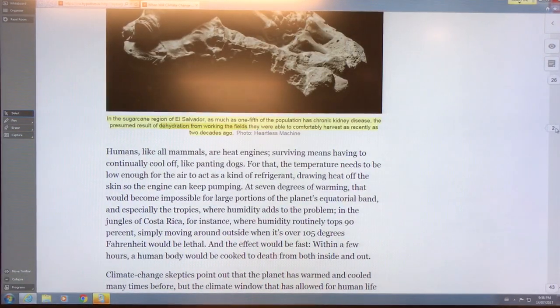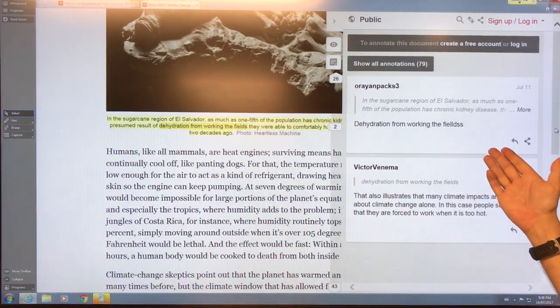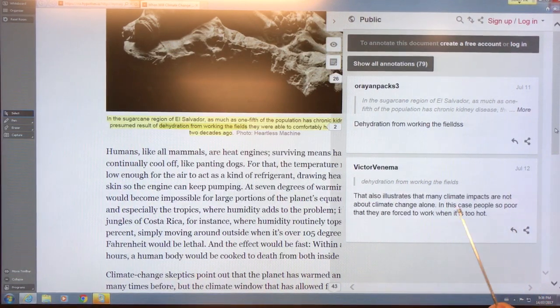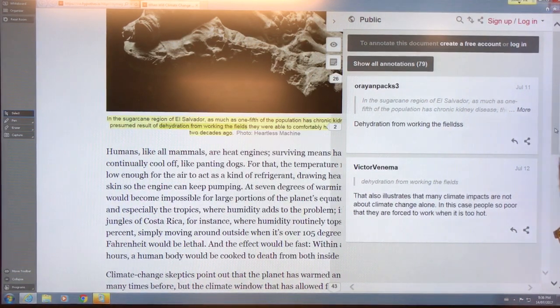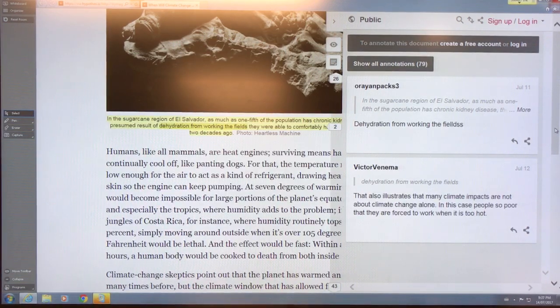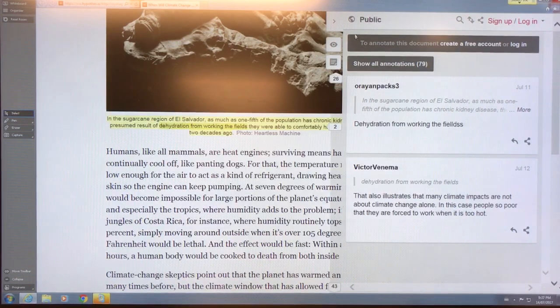Dehydration working in the fields. Many of the climate impacts are not about climate change alone. Poor people are forced to work when it's too hot. Climate change is not fair at all. The poor suffer the most. People that didn't cause the problem suffer the most. Yeah, we know that. But how is this a criticism of the paper? This is an addition, if you like.